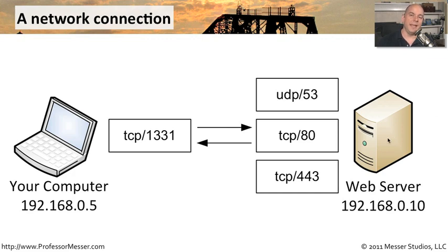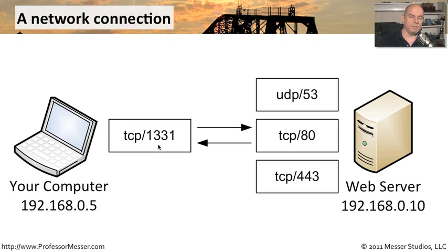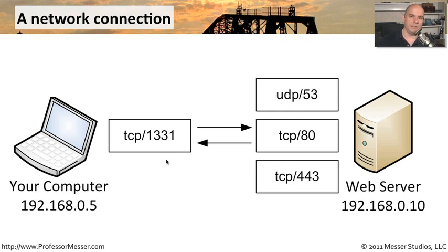The web server then sends the web page not only to 192.168.0.5, but very specifically to the port number that requested it — TCP 1331. When this machine receives that web page, it generally tears down the flow and tears down that session. If we need to communicate to that web server again, we'll choose a different ephemeral port number every single time.